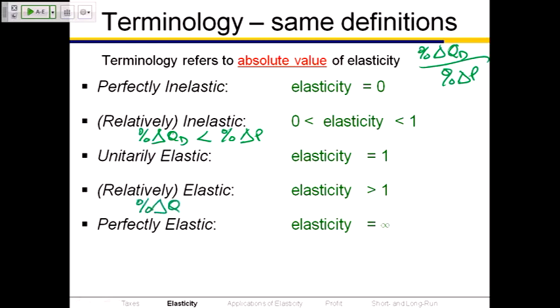When demand is relatively elastic, the percentage change in quantity demanded is bigger than the percentage change in price. That means even a small change in price causes a big change in the quantity demanded in absolute value.